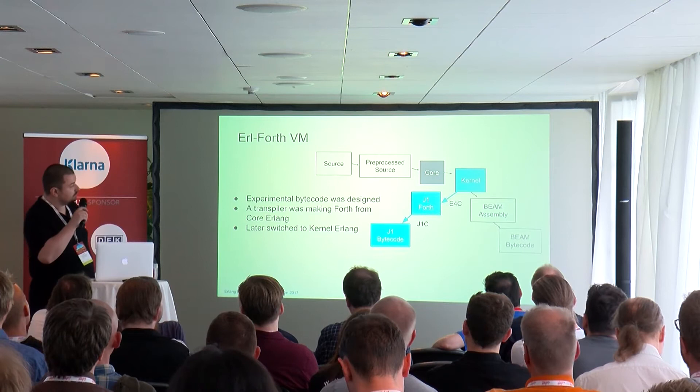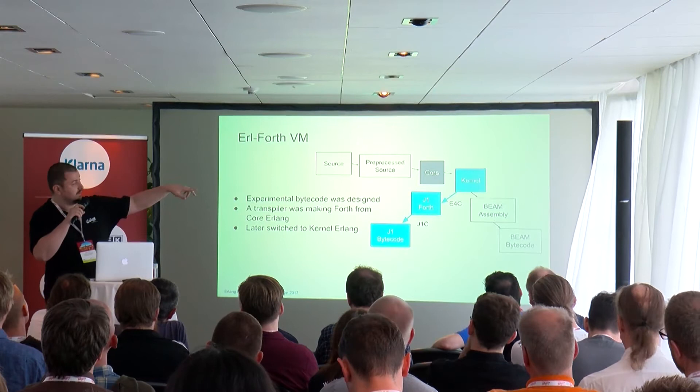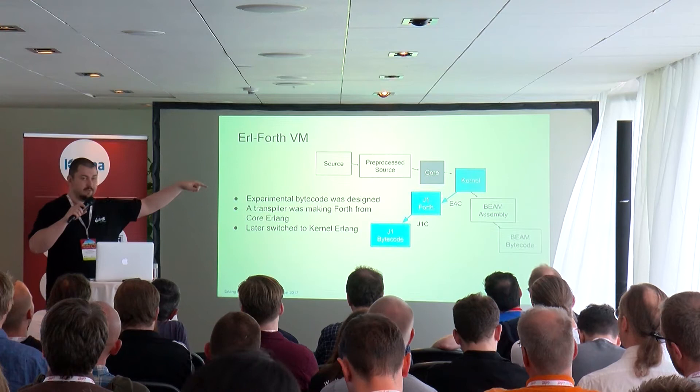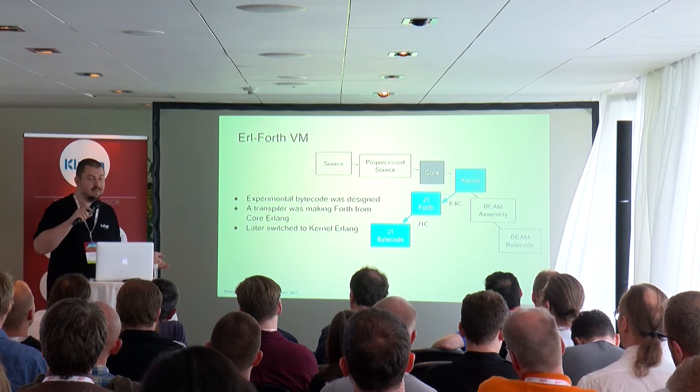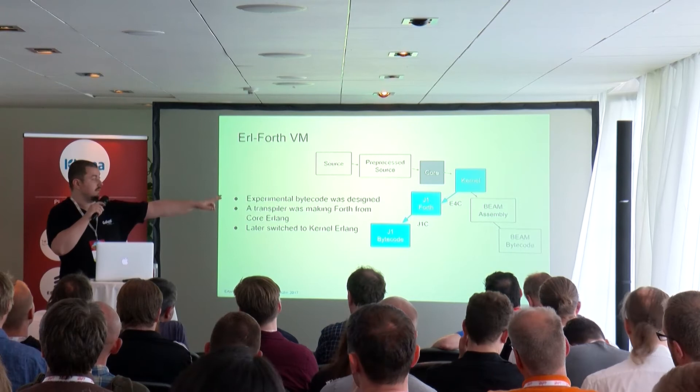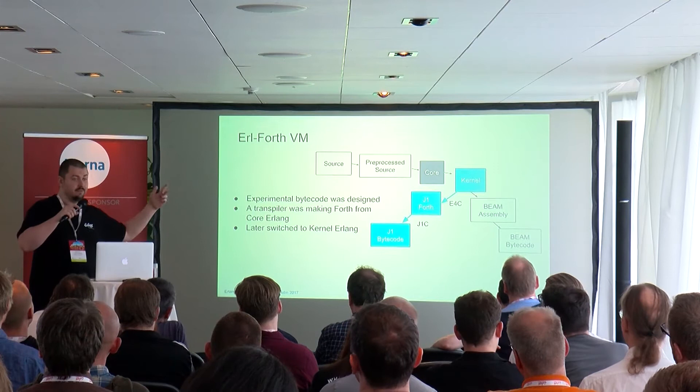The chain now looks like this: my tool called E4C, part of the compiler application, invokes the Erlang compiler, takes the Kernel stage, and produces J1 Forth text as a list of strings — which I can also parse from a source file if I want to write simple Forth. Then the next tool, the same program but a different application, produces bytecode. Two stages, very simple.